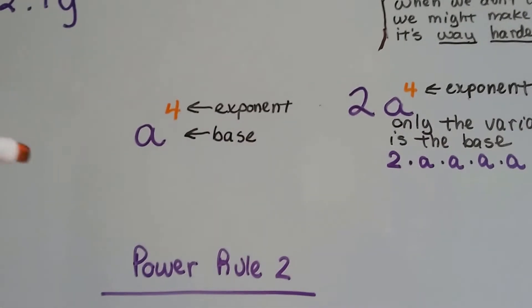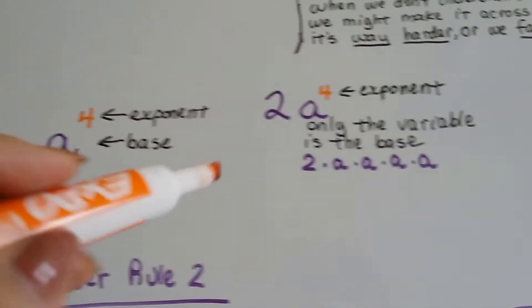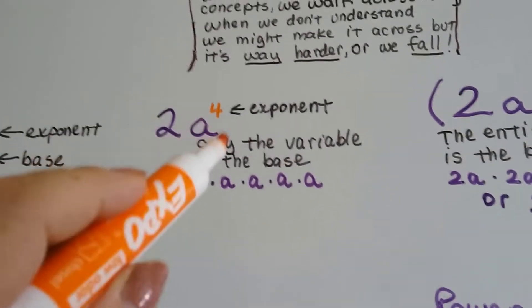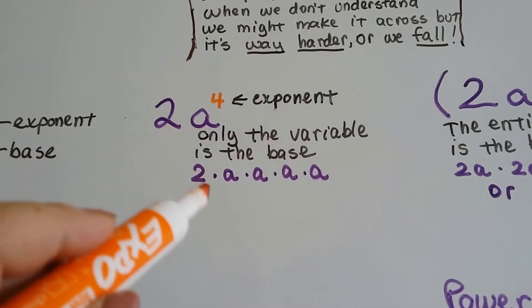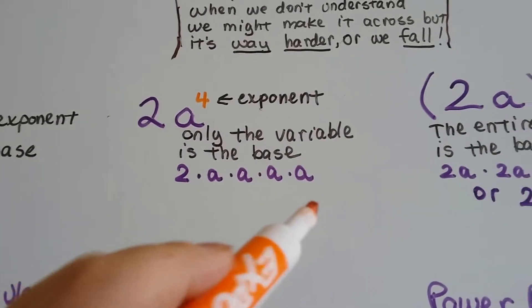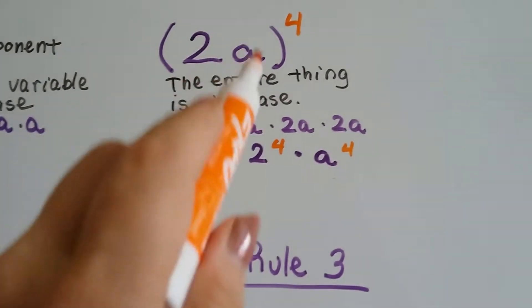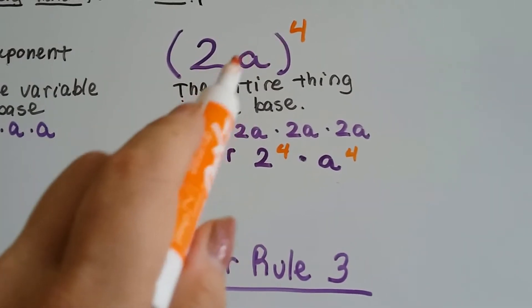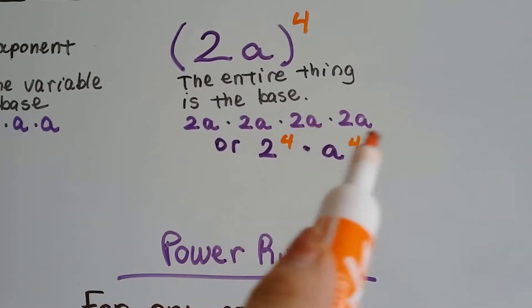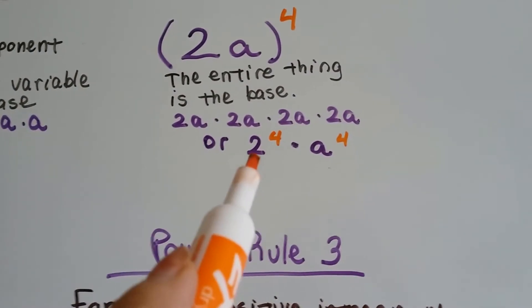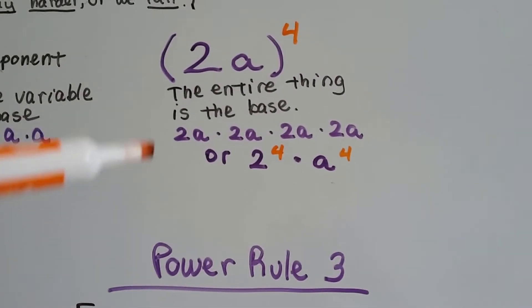For a quick review: in this one, the a is the base and the 4 is the exponent. In this one, only the a is the base and the 4 is the exponent. This would mean 2 times a times a times a times a. But when we see the 2 and the a together in parentheses, that means the 2a is the base and is multiplied to each other 4 times — 2a times 2a times 2a times 2a, or it could be 2 to the 4th power times a to the 4th power.